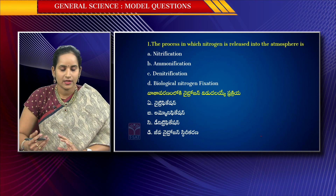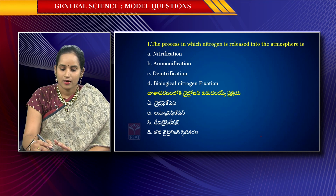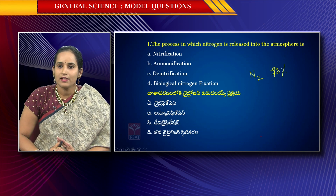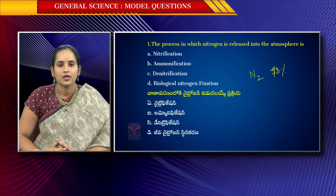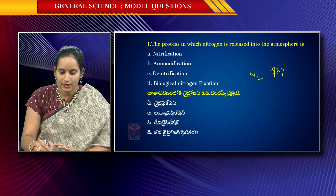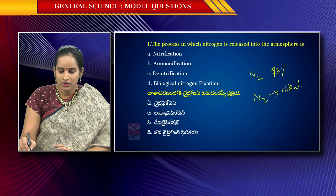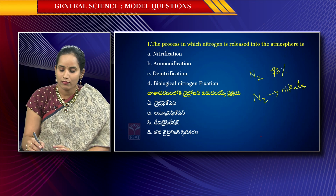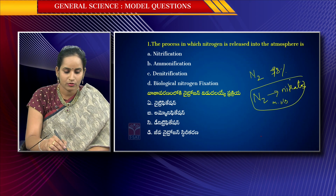Coming to nitrogen fixation: nitrogen is in the atmosphere — 78% of the atmosphere is nitrogen. Plants are not able to use atmospheric nitrogen directly, so nitrogen gas is converted into nitrates with the involvement of microorganisms. This process is called nitrogen fixation.